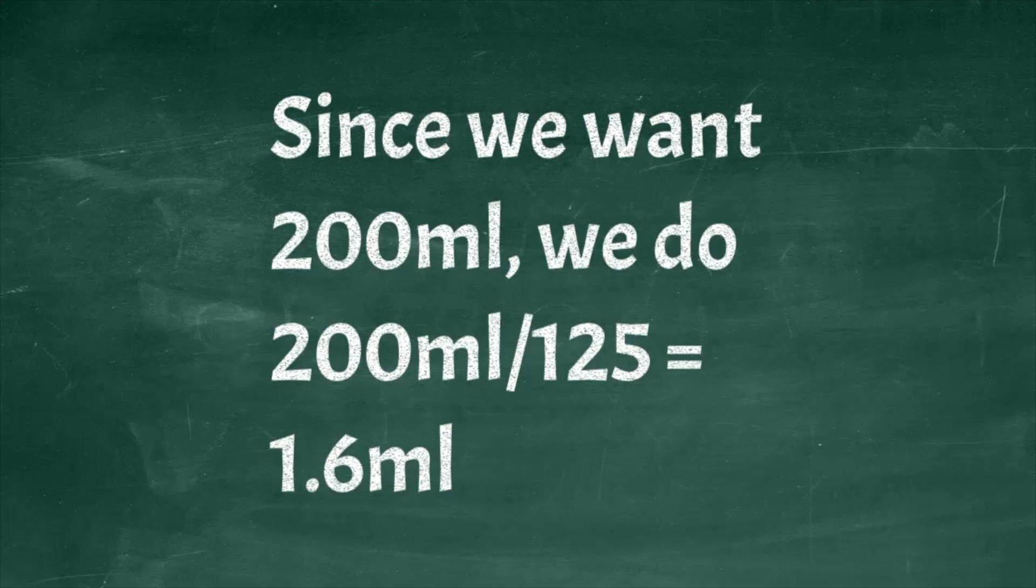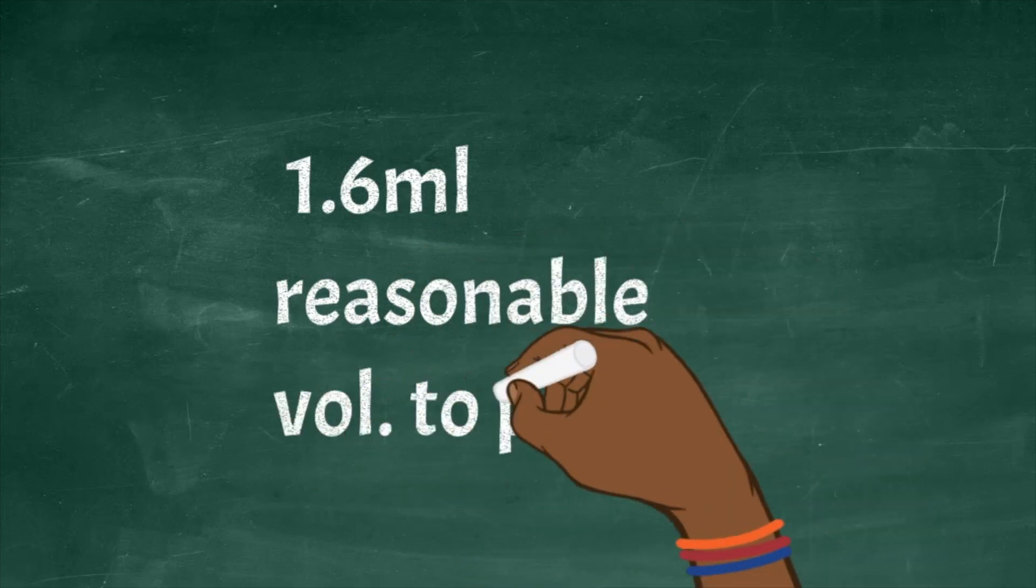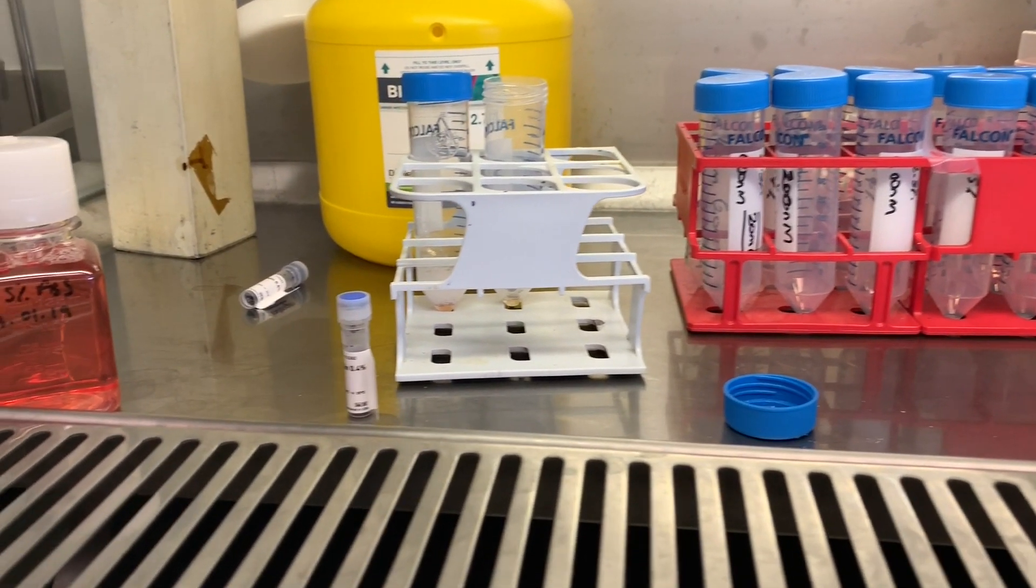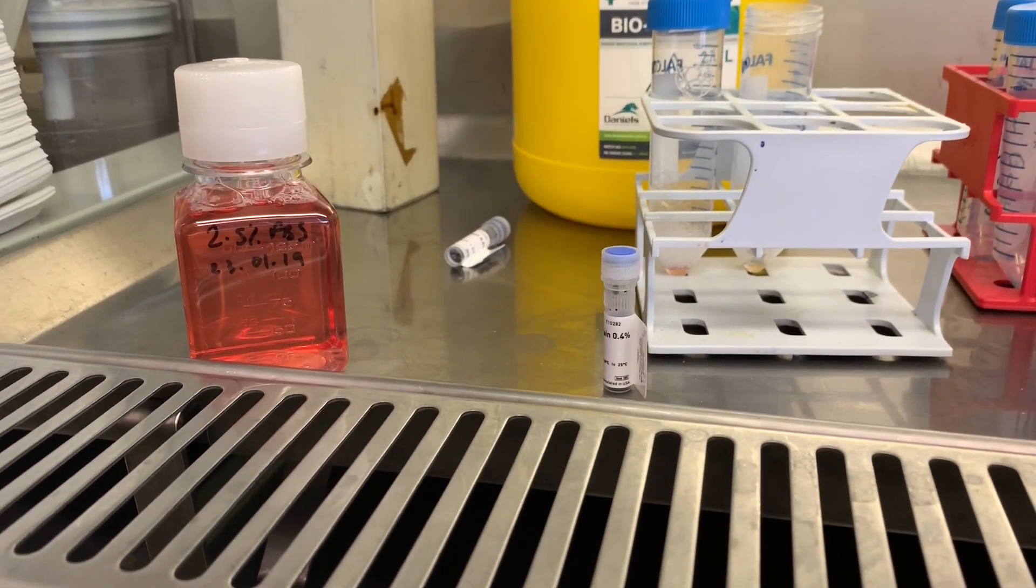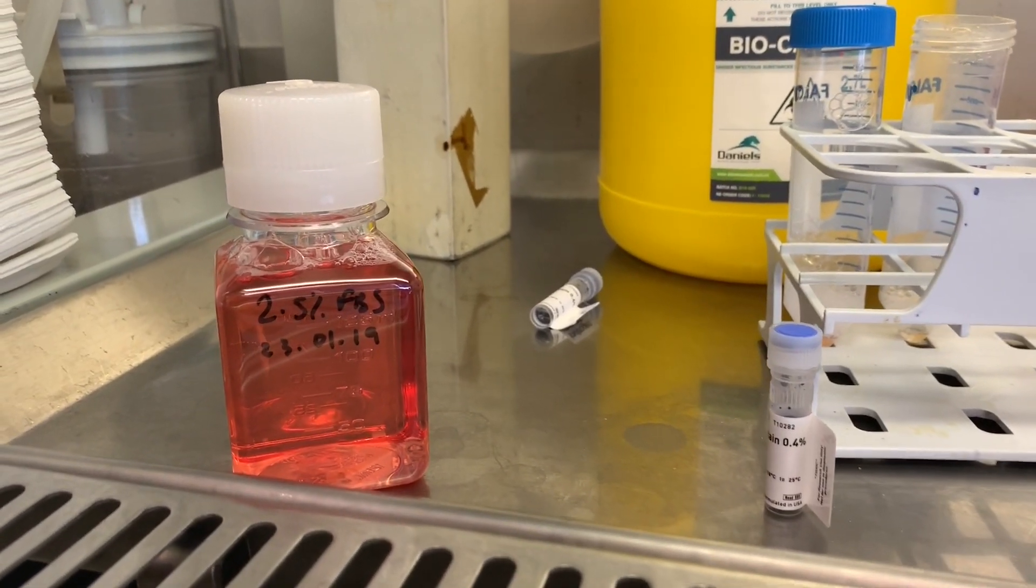We are happy with 1.6 milliliters because we have tools and equipment that can easily allow us to aspirate that volume accurately, so we don't need to scale it to microliters. We'll go ahead and prepare 1.6 milliliters of the selection agent to add to our 200 milliliters of media in order to have it be at 0.4 mg per milliliter, which we can now use in our cell culture.